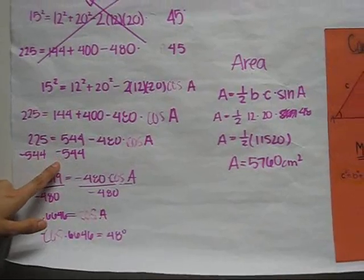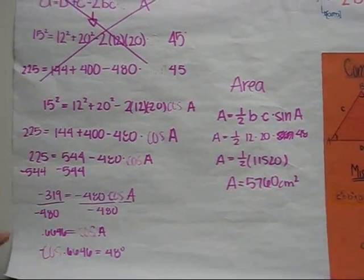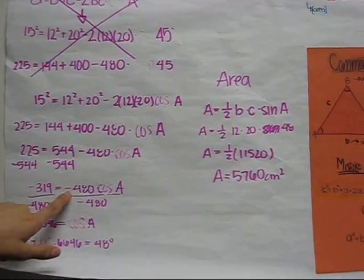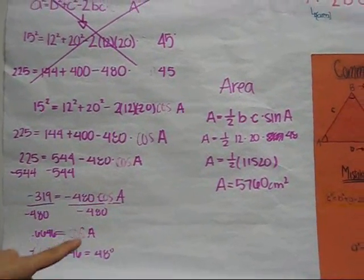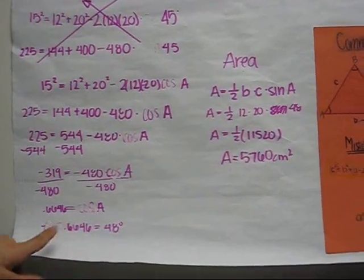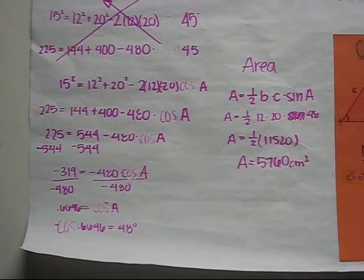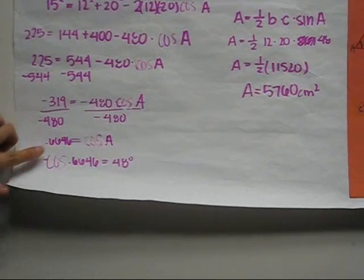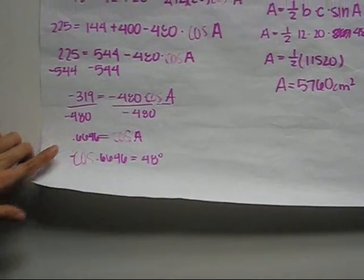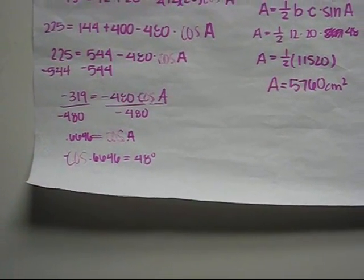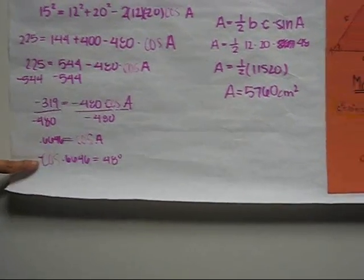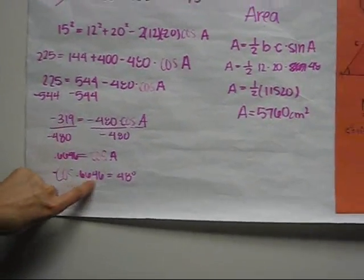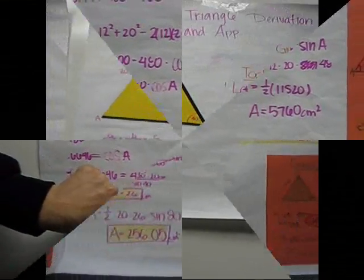And then next, you're going to subtract 544 from 225, and that gives you negative 319. And then you basically bring down the 480 times cosine of angle a. And you just divide by negative 480, and you get 0.6646 equals cosine of angle a. And then you do the inverse, and you get angle 48 degrees.